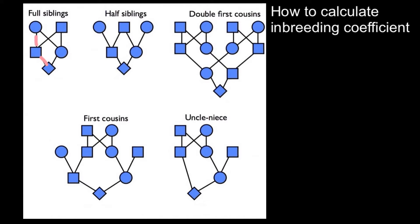There are two pathways here for how he can get genes. Let me change the thickness — this is going to be one pathway, and here is going to be a second pathway, using different colors. In the red pathway we have one, two, and three people, and in the blue pathway we also have one, two, and three. In order to calculate the inbreeding coefficient we need to use a formula.